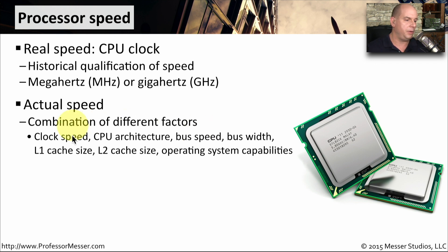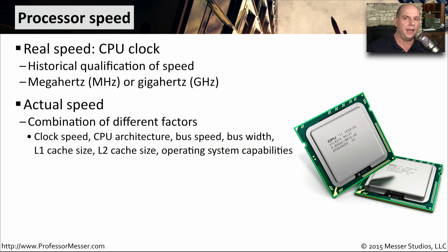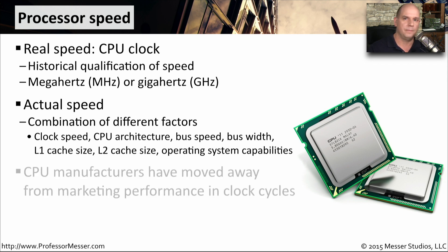There's clock speed, there's CPU architecture, bus speed, the width of the buses, the size of the caches, and the operating system optimizations themselves — all of these will affect what the actual speed of your computer happens to be.